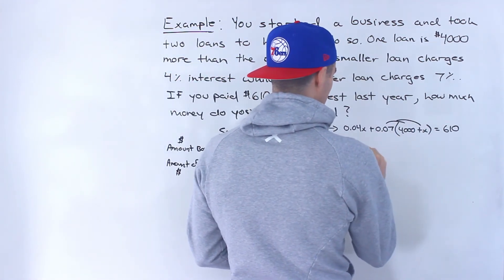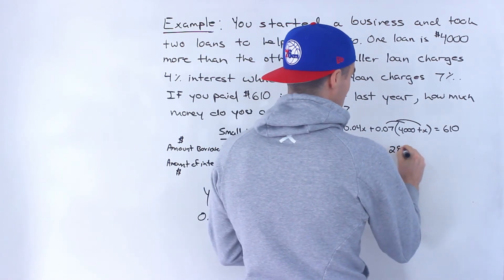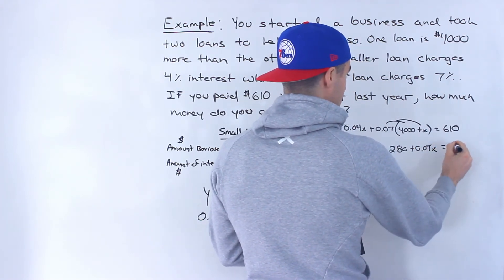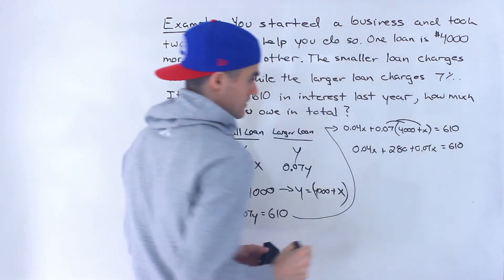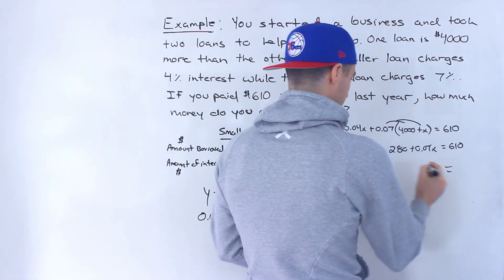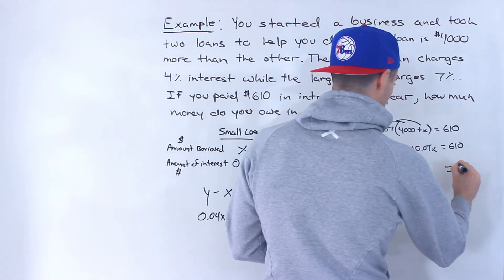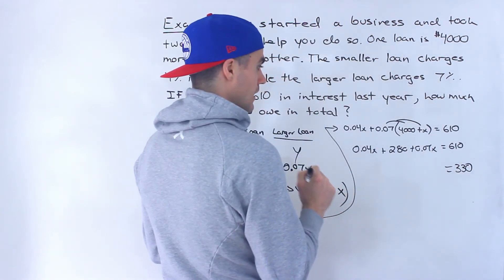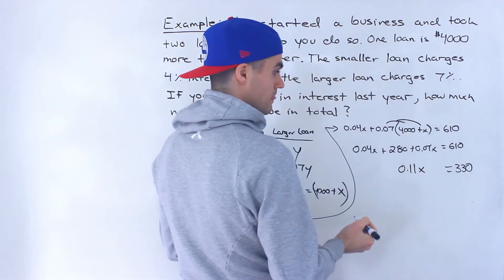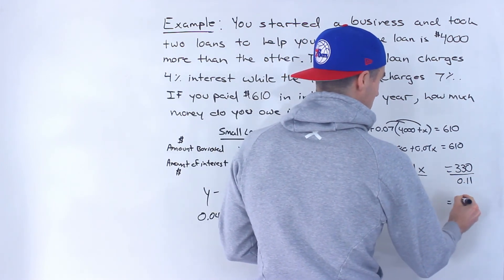Now we can solve for X. If we distribute, 0.07 times 4,000 gives us 280, and 0.07 times X gives us 0.07X. So we have 0.04X plus 0.07X plus 280 equals 610. Bringing the 280 over, 610 minus 280 gives us 330. Then 0.04X plus 0.07X gives us 0.11X. Dividing both sides by 0.11, X equals 3,000.